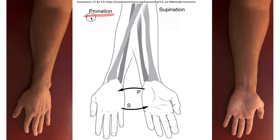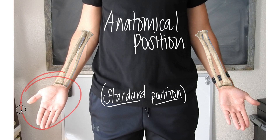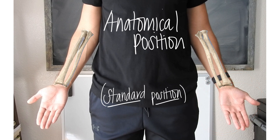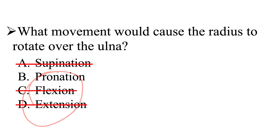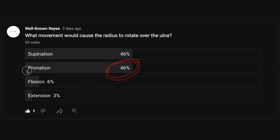Here we have pronation. Think of "prone" — that means face down. Notice that my hand is face down on my desk. Supination is face up, with the palm facing up. When the arm is prone, you can see that the radius — on the thumb side — is over the ulna, which is on the pinky side. In supination, the ulna and radius are parallel. Since anatomical position already has the palms face up, that is supination, with no rotation occurring. So supination is eliminated, leaving pronation as the correct answer. 46% of you got it right — pronation causes the radius to rotate over the ulna.